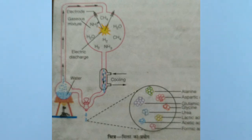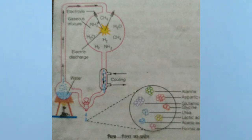Next is Stanley Miller's experiment. How did life originate? To understand this, the Oparin–Miller theory was demonstrated by Stanley Miller through his experiment. The labelled diagram of the experiment is extremely important.